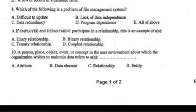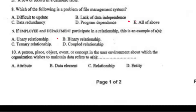Which of the following is a problem of file management system? All of the above. If employee and department participate in a relationship, this is an example of — right option B, binary relationship.